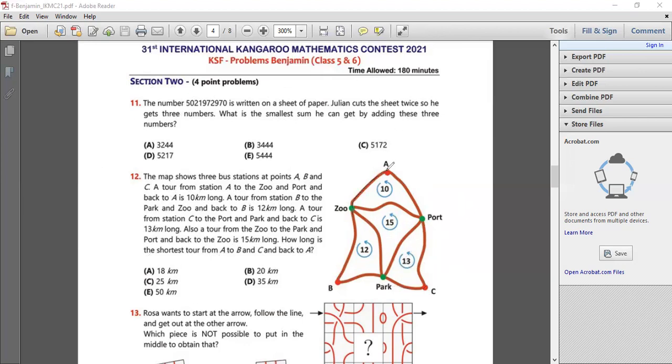Now if you look at the question this route is 10 kilometers, this route is 12 and this route is 13. So if we add them up we get 25, we get 35 kilometers.